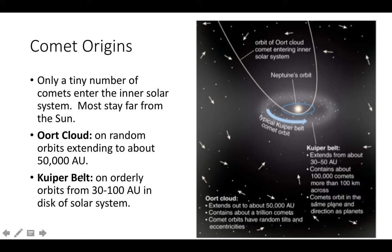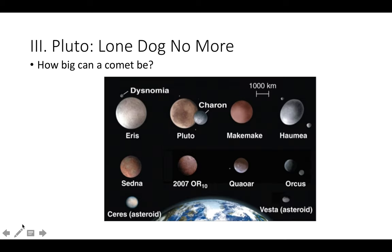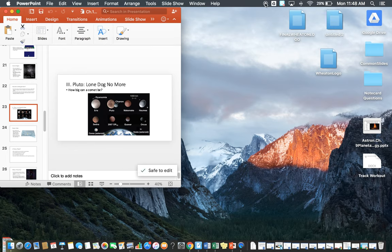The origins of comets come from two sources: the Oort cloud and the Kuiper belt. Only a tiny number enter our inner solar system; most stay very far away. The Kuiper belt is very orderly, almost in the same plane as our solar system — 30 to 100 AUs in a disk. The Oort cloud has very random orbits and is much larger. Kuiper belt comets formed in the Kuiper belt and orbit in the same direction as our planets. The Oort cloud was once closer to the sun but was kicked out by gravitational interactions from the gas giants, giving it orbits in any direction. That's all for comets and meteorites — tomorrow we'll pick up with Pluto and finish Chapter 12.